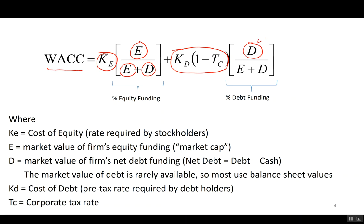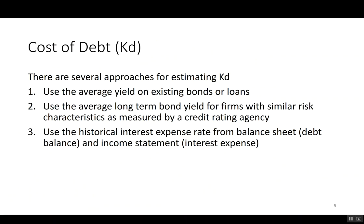In theory, we'd like the market value of both debt and equity to calculate the weights. In practice, market value of equity is easy — stock price times number of shares. Market value of debt is very difficult to obtain, so we'll use the book value of debt from the accounting balance sheet. There are three ways to calculate cost of debt: average yield on existing bonds or loans; average yield on bonds from firms with similar credit ratings; or historical interest expense divided by total debt outstanding.